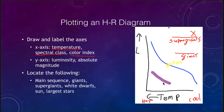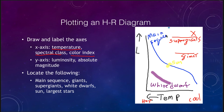We also see the white dwarf stars in the lower left, and the main sequence running diagonally across the diagram. All of these different types of stars are located at distinct regions in the HR diagram.